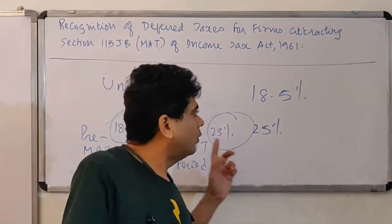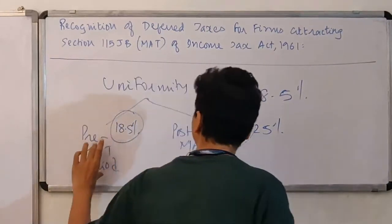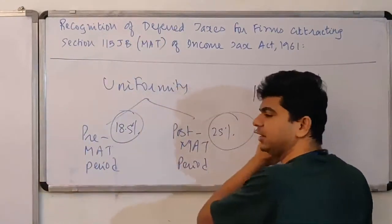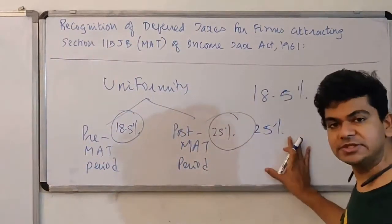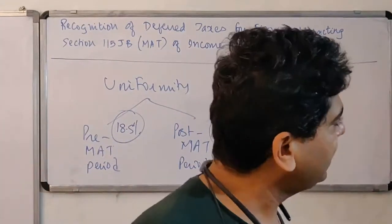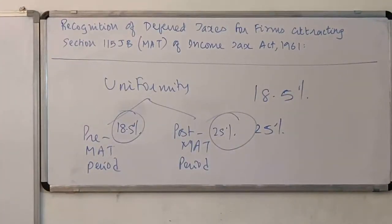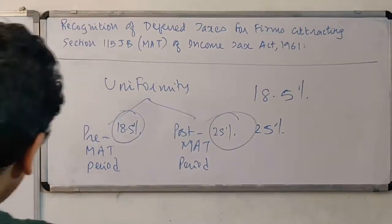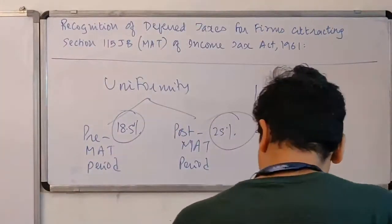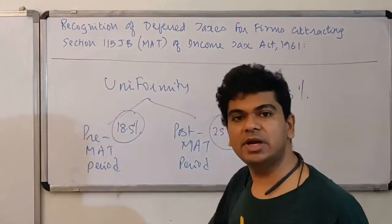We want to ensure that whatever is the tax rate for calculating the deferred taxes should remain the same. So my regular tax rate of 25% will be used. So even though my current tax is at 18.5%, I will not use 18.5% to determine the deferred taxes. Deferred taxes will be continued to be determined as per the regular tax rate. Yes, we do have a question based on this concept.